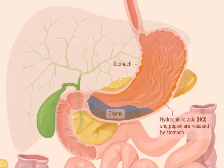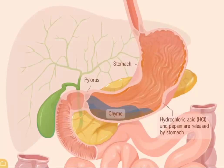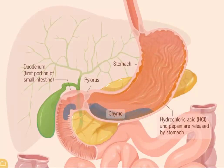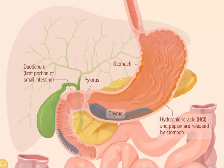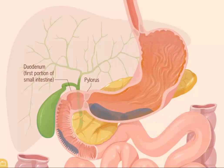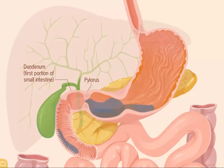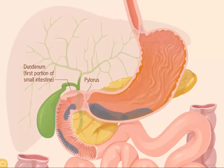When the chyme reaches its proper softness, the pylorus opens and the chyme is slowly released into the first portion of the small intestine, called the duodenum. Peristaltic contractions continue in the duodenum, where the chyme mixes with pancreatic juice and bile.